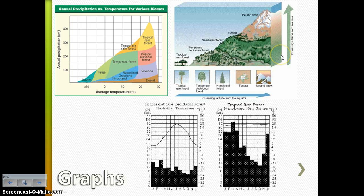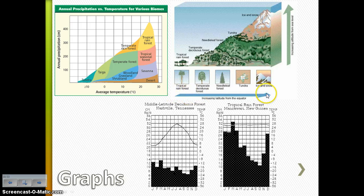Use this graph to answer the question: which biome would you expect to find closer to the equator — the temperate deciduous forest or the coniferous forest, which is what they're calling the needle leaf forest? Here is the equator, and here's increasing latitude — further away from the equator. You're going to have temperate deciduous forest before you have coniferous forest. So you would expect to find the temperate deciduous forest closer to the equator.